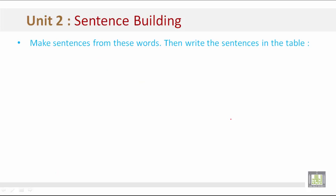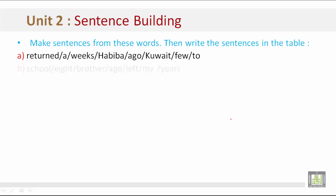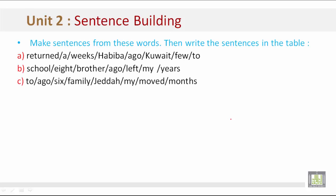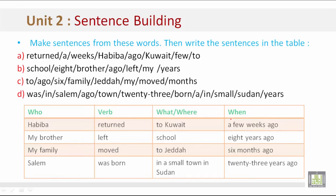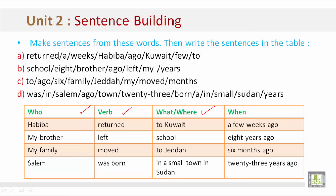Sentence Building. Make sentences from these words, then write the sentences in the table. We have examples A, B, C, and D, all going into the chart below. Remember, it begins with who, then the verb, then what and where, and finally when. Example A: 'Habiba returned to Kuwait a few weeks ago.'